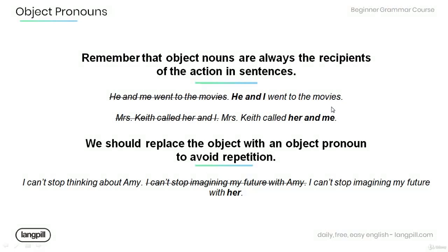Let's have a look at another example: 'Mrs. Keith called her and I.' This sentence is incorrect because the subject pronoun 'I' is being used as the object of the sentence. The correct form would be: 'Mrs. Keith called her and me.'